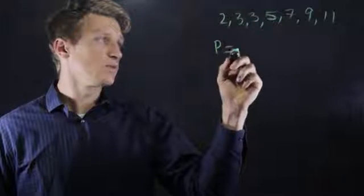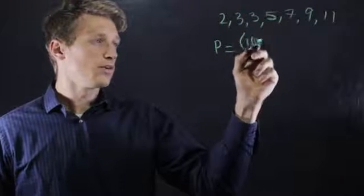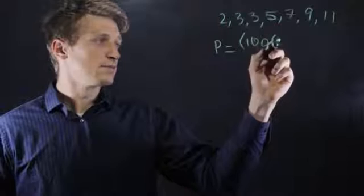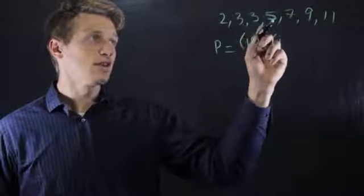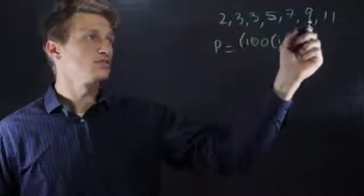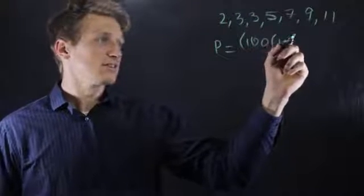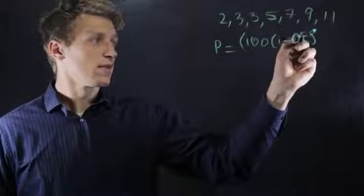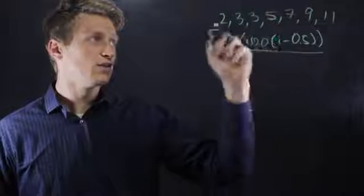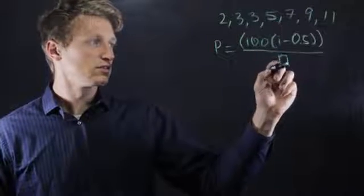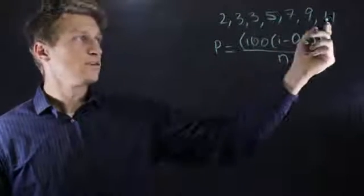Percentile rank equals 100 times the i, which is the rank just counting this way in order from least to greatest, minus 0.5, and all that divided by the number of operations, or number of numbers.